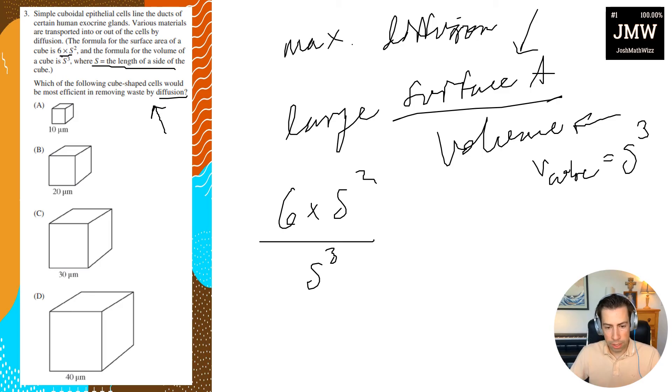So what I'll do is I'll just go ahead and write this out, and you'll see that our s's are going to cancel. So I will have 6 divided by s. Therefore, my maximum diffusion is going to be...